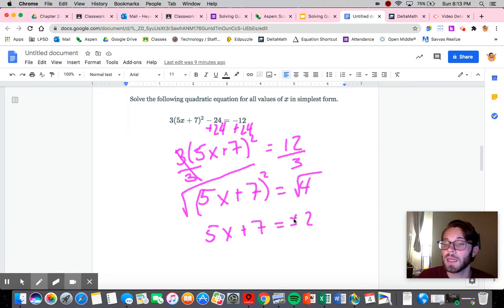So that does mean, though, that we're going to be dealing with essentially two different equations. You could leave it as the plus or minus 2, or what you could do is you could rewrite it as two different situations. So you could rewrite it as 5x plus 7 equals 2, and then 5x plus 7 equals negative 2. It's okay however you choose to write it.